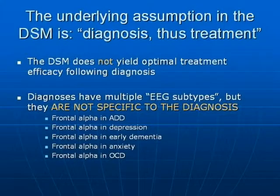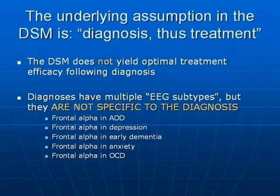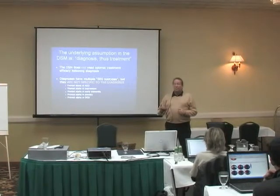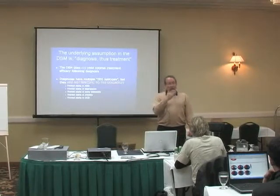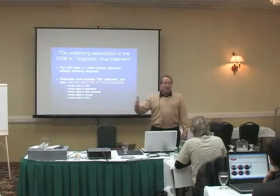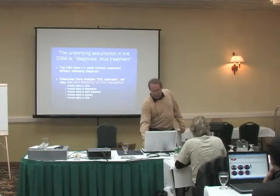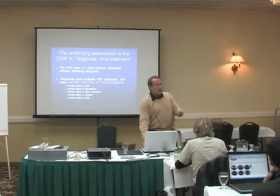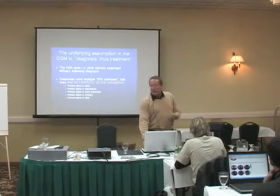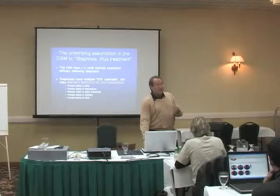You can see frontal alpha in ADD, frontal alpha in depression, frontal alpha in dementia, frontal alpha in anxiety, frontal alpha in OCD. So maybe frontal alpha isn't really a subset of any one of those — it's kind of a basic failure mode of the brain, as opposed to a DSM subgroup within each of these diagnostic categories. You're seeing the same data cut across multiple diagnostic groupings. Frontal alpha isn't a subtype of ADD, depression, anxiety, or OCD. It's an EEG signature of a failure mode in the brain.